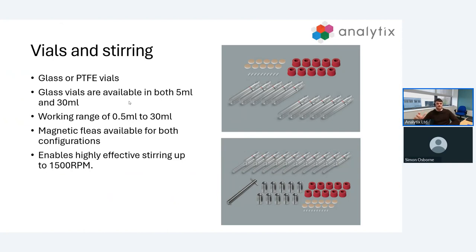These two vials give us a working range of 0.5 mils all the way up to 30 mils, and we have magnetic fleas larger and smaller for both of these variations that enable really effective stirring.